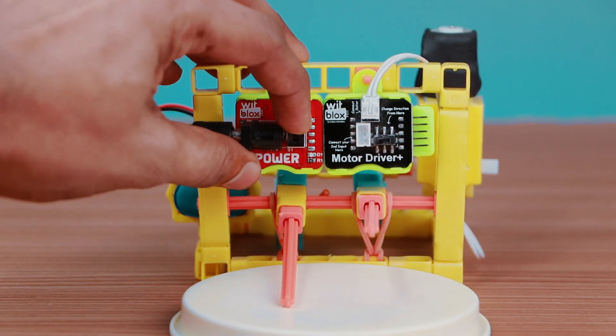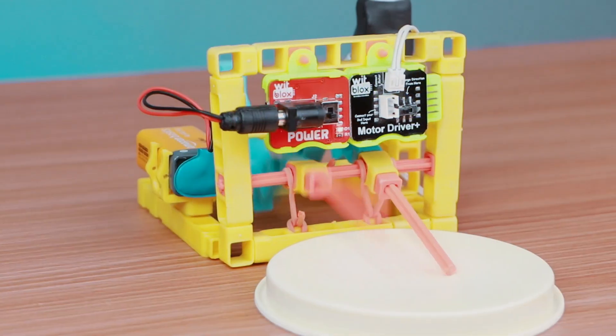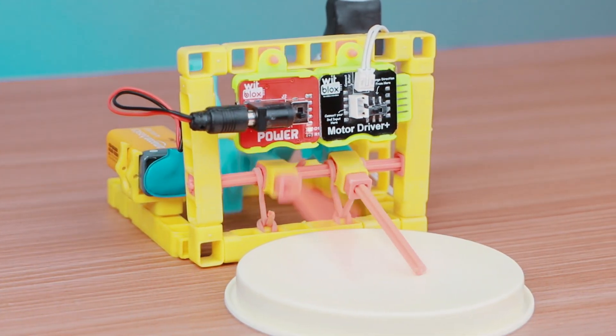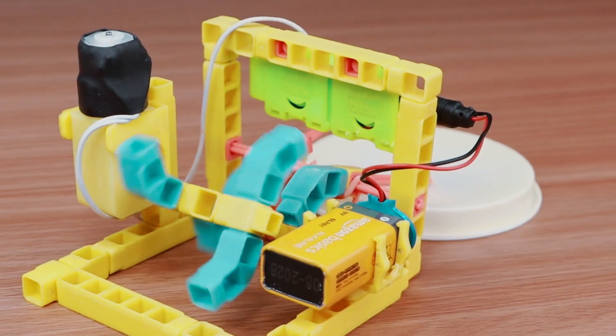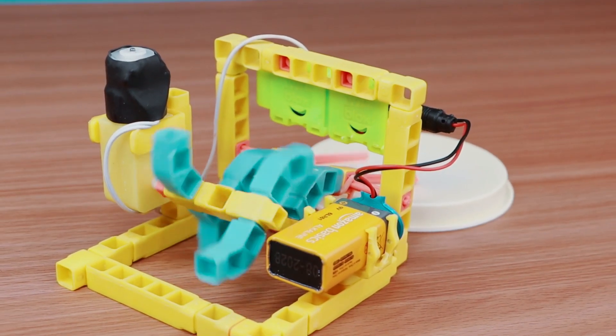We are going to build a robot that can play music continuously. In this project, we will build a drummer robot. This drummer robot uses a cam follower mechanism to play the music. Let's get started.